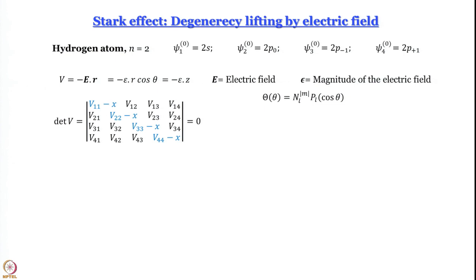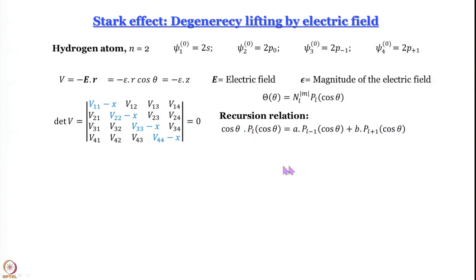We write down the angular (θ, φ) part of the wave functions. From the recursion relation for Legendre polynomials, cosθ·P_L(cosθ) can be written as a linear sum of P_{L−1}(cosθ) and P_{L+1}(cosθ).